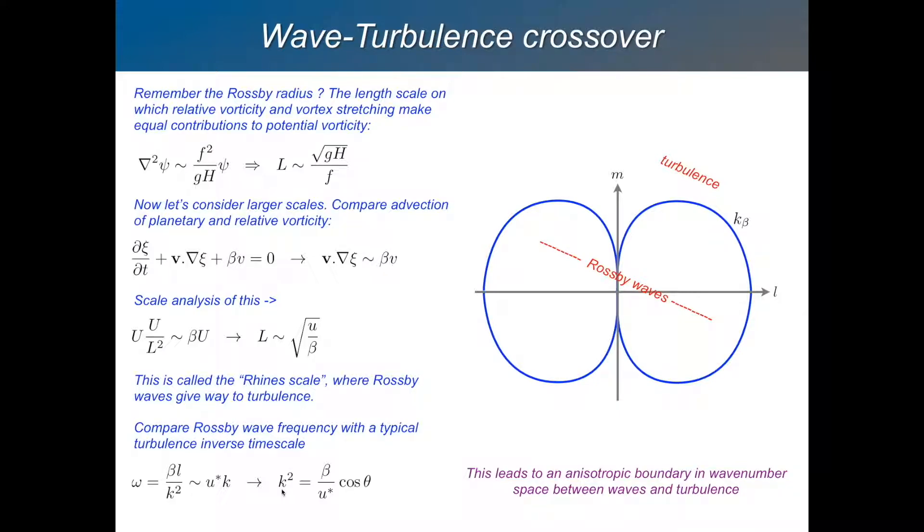Remember k squared is l squared plus m squared, and l is the zonal wave number. So you get this equation: k squared equals beta over u star times cos theta, where theta is the angle between l and m. You can plot that and you get this nice anisotropic dumbbell plot where this blue curve is the boundary between where turbulence takes over and where you have Rossby waves. At larger scales here, inside the blue dumbbell, you have Rossby waves, and outside you have geostrophic turbulence.